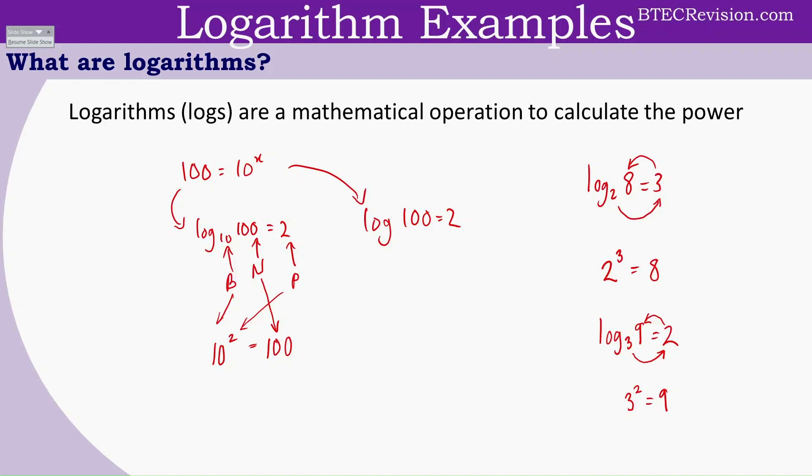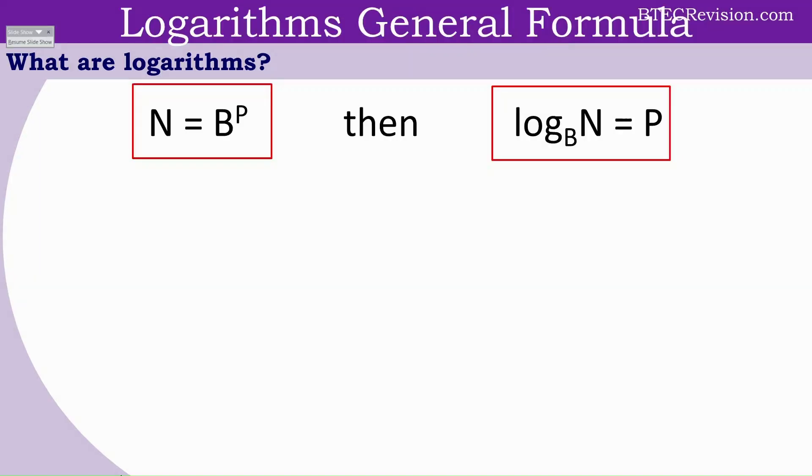Replacing all these values with letters, as in algebraic notation, brings us to the general equation. Here we have log to the base, we'll replace that with B. And 9 is the number, we'll replace that with N, which is equal to P for the power. We can also write this as B for base to the power P equals N for the number. This is the general formula for logs.